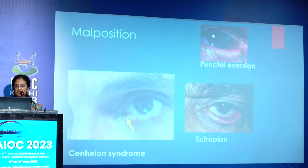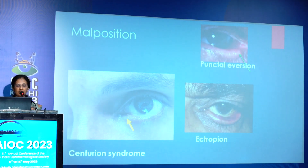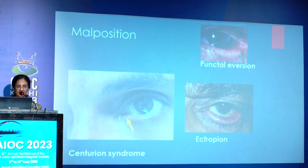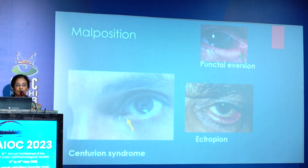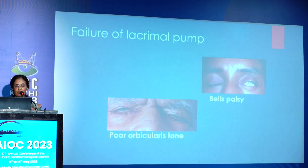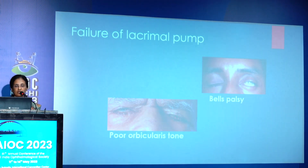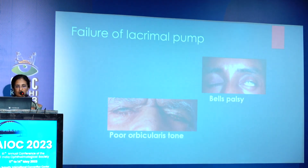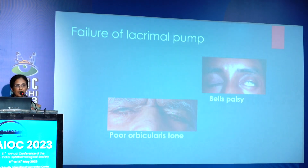Malposition: punctal eversion or frank ectropion, or centurion syndrome — where the nose is prominent and there is anterior insertion of the medial canthal tendon's anterior limb, so the punctum will not be in close apposition with the globe. Syringing will be patent in these cases, yet the patient can have watering. Lacrimal pump failure occurs in patients with poor orbicularis tone, as in facial palsy, old age, or neurodegenerative diseases like Parkinsonism. Make a note of the frequency and completeness of the blink.